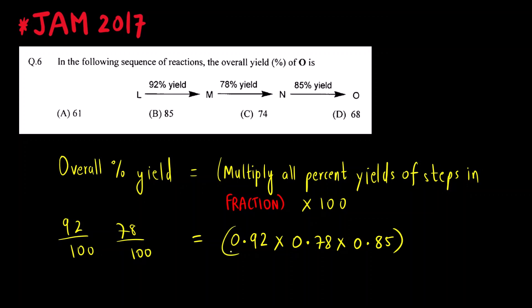So multiply all of them. The answer that we get, multiplied by 100, will give us 60.9.